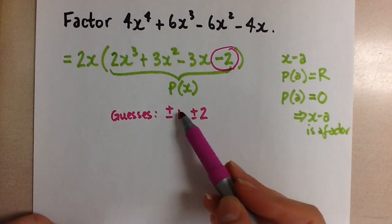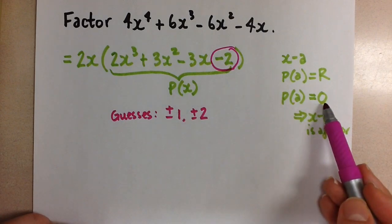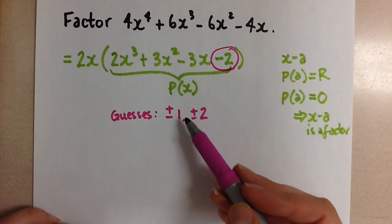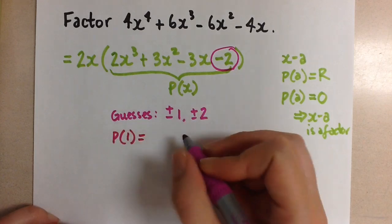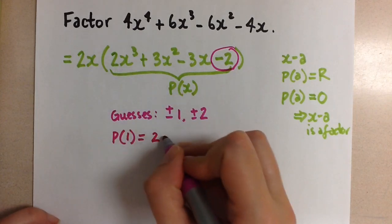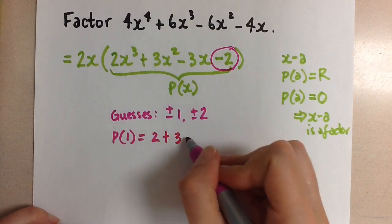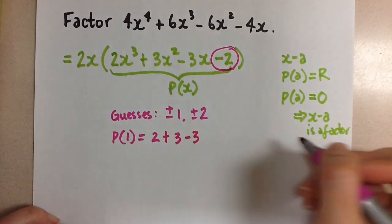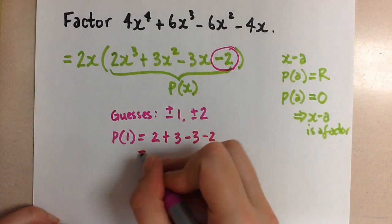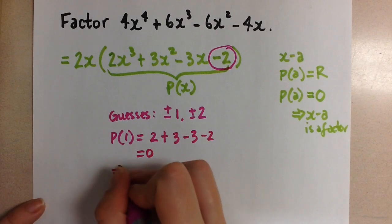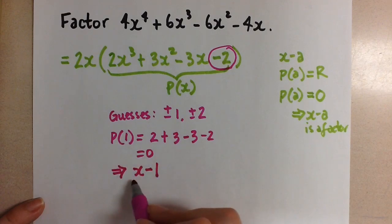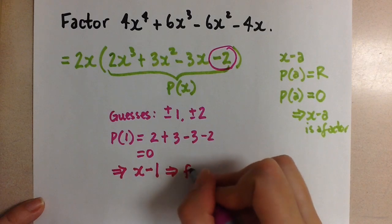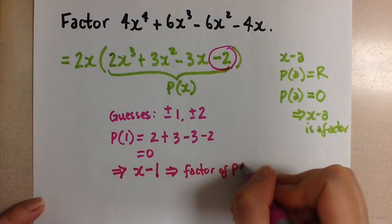So we start subbing in these values until we get a remainder of 0. I always recommend that we start with the simplest number, and that is always positive 1. If I sub in positive 1 here, we'll get 2 times 1 plus 3 times 1 minus 3 times 1, and then minus 2. And that is equal to 0. So this means we found it on our first try. X minus 1, because P at 1 is equal to 0, this is a factor of the original polynomial we were dealing with.